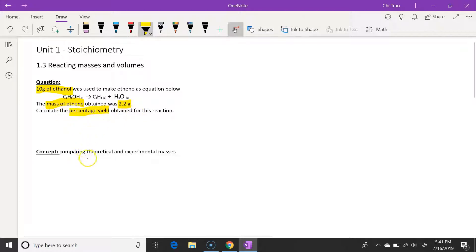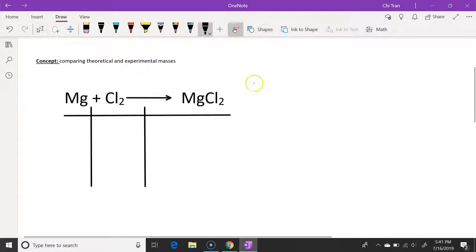The concept of this question is comparing the theoretical and experimental masses. Use this equation as an example and we can draw a table like so where the individual compound is lined up in its individual column.